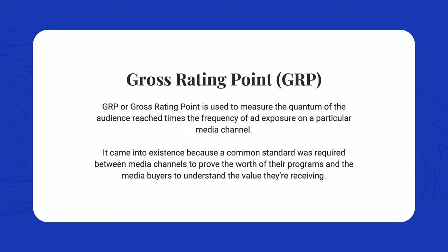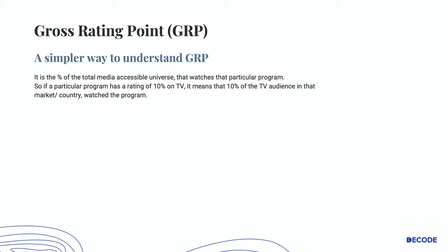Let's start with what is GRP. GRP, or Gross Rating Point, is used to measure the quantum of audience reached times the frequency of ad exposure on a particular media channel. It came into existence because a common standard was required between media channels to prove the worth of their programs. A simple way to understand GRP is that it is the percentage of total media accessible universe that watches a particular program.